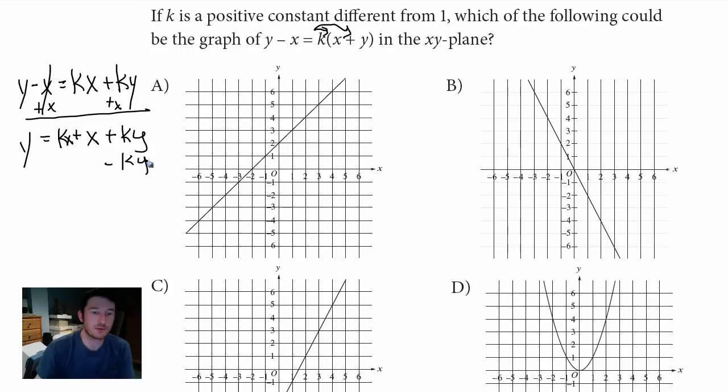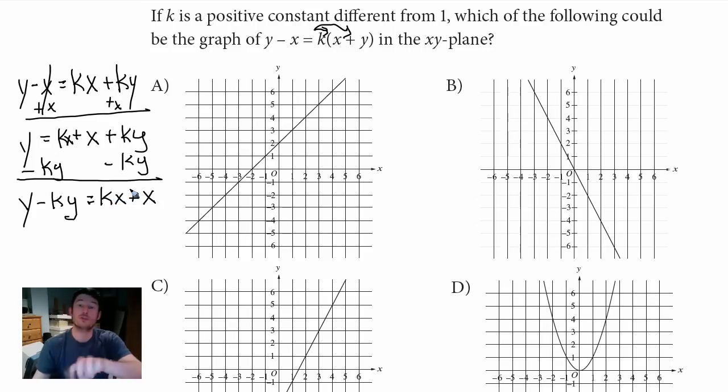I'm going to minus ky from both sides, minus ky. So we got y minus ky equals kx plus x. Were you able to get that far? Just distribute and get all the x's on one side and all the y's on the other.